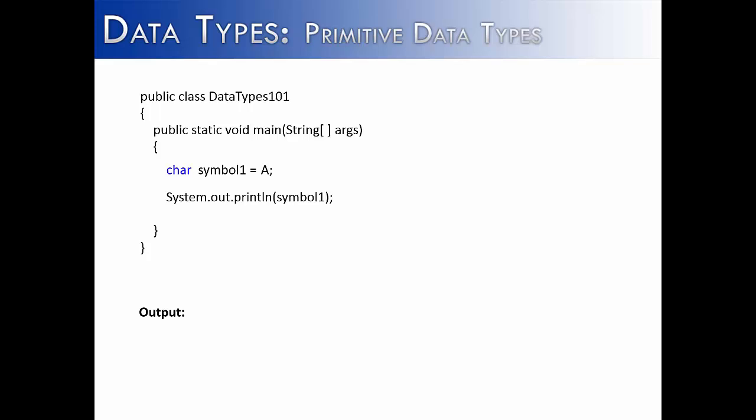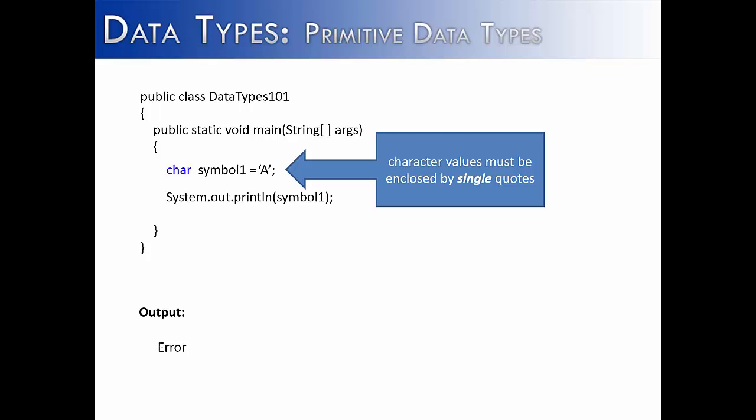So looking at it in a programming environment, we can assign A to symbol of the data type char. Now this actually would not compile. It would give us an error. And the reason is it would be looking for a variable called A. We don't want it to look for a variable called A. We want it to look for an actual character value. And characters in Java must be enclosed by single quotes, as we have done here. And so now when we do this, we will get A as we expected.